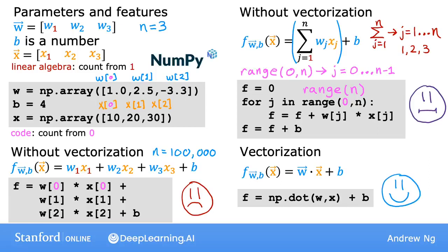I want to emphasize that vectorization actually has two distinct benefits. First, it makes the code shorter—it's now just one line of code, isn't that cool? And second, it also results in your code running much faster than either of the two previous implementations that did not use vectorization.